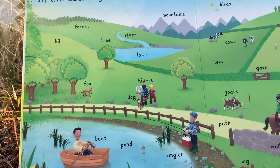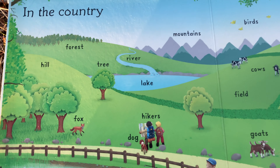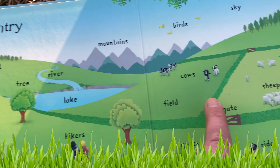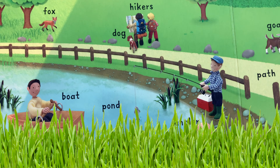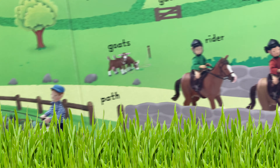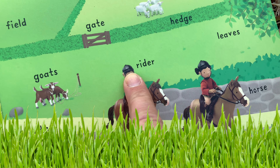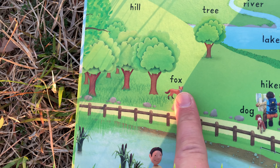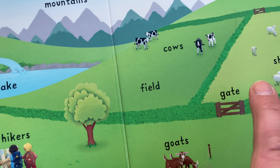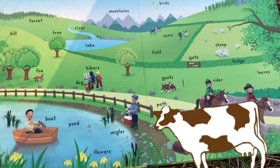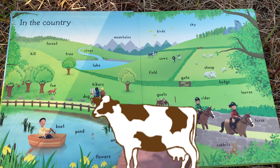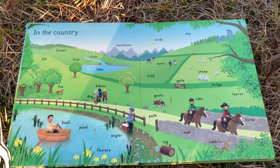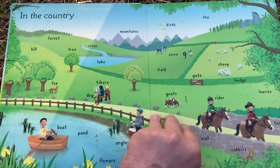Let's just look at a few of these, not everything. There's a forest up here, a lake here, some sheep over here, an angler — this is a fisherman — a horse over here and a rider, hikers and a dog, and a fox, and a gate. There's a lot of stuff here. Do you have countryside in your country? A lot of countries have countryside, but not all countryside looks like this, does it?